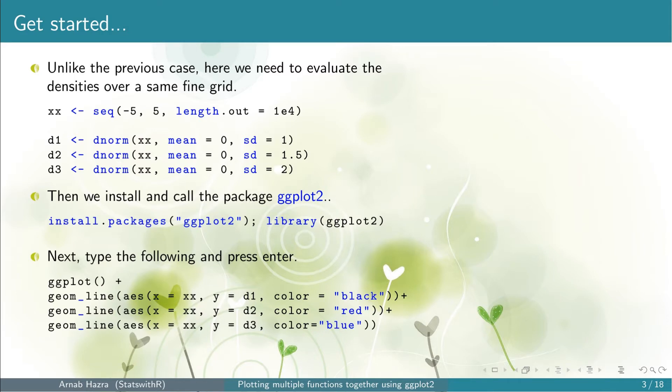In the console window, type ggplot() plus geom_line() with aesthetics x equals xx, y equals d1, and color equals 'black'. Similarly, add the lines for d2 and d3 as well. Note that if we do not use colors it will be difficult to identify the functions, so either we need to choose different colors or different line types. Here we stick to different colors, choosing 'red' and 'blue' for d2 and d3.